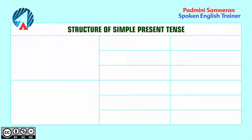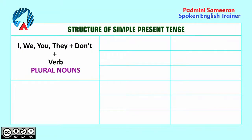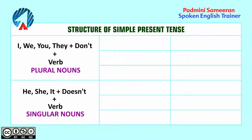Now let's look at the structure of the negative forms. How is the negative of the simple present tense formed? With the subjects I, we, you, and they, and plural nouns, we use 'don't' plus the verb in the present form. With he, she, it, and singular nouns, we use 'doesn't' plus the present form of the verb.